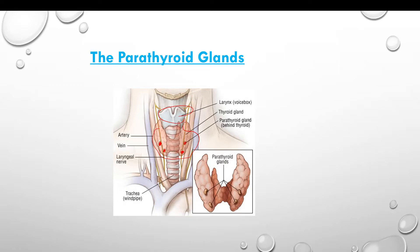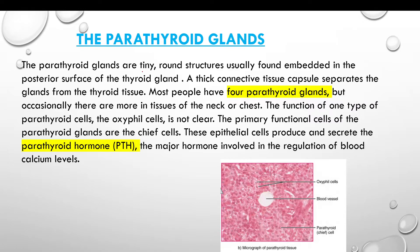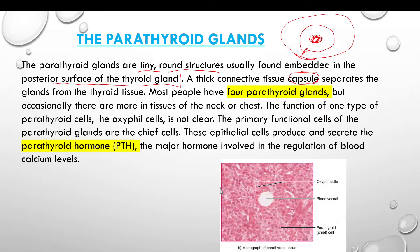It is very rare in location in the area of the neck. Parathyroid glands are tiny round structures, usually found embedded in the posterior surface of the thyroid gland. A covering layer separates the parathyroid gland from thyroid tissue.